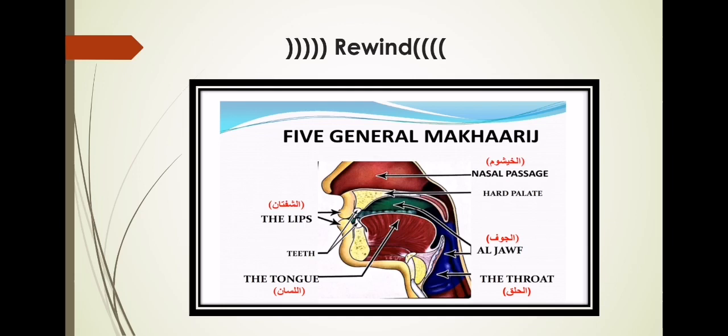The Makharij is divided into two: Makharij al-Aamah (general) and Makharij al-Khassah (specific). The five general Makharij are: Al-Jauf — the empty cavity of the mouth; Al-Halq — the throat; Al-Lisan — the tongue; Al-Shafatan — the two lips; and Al-Khayshum — the nasal cavity.